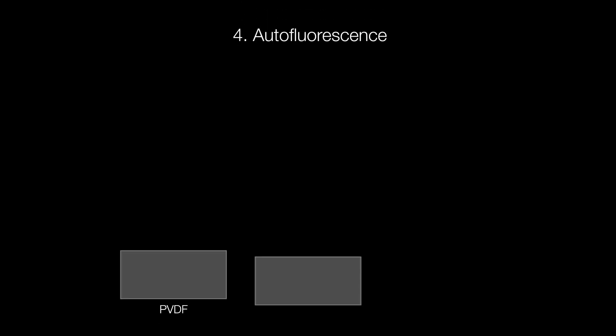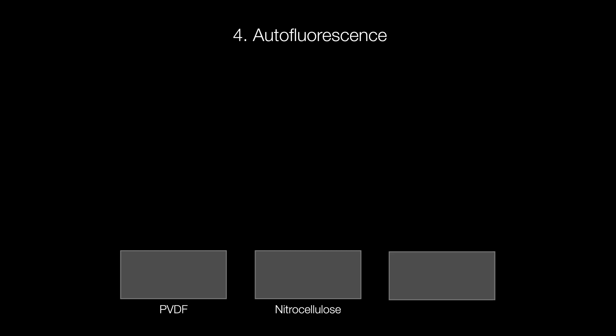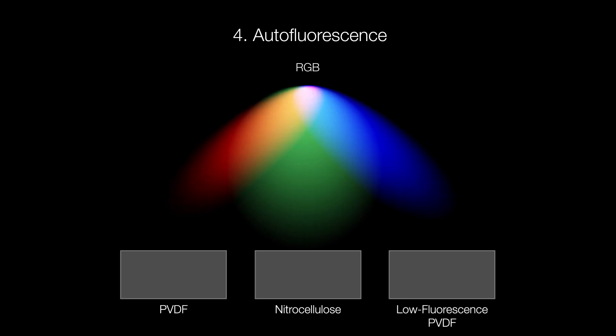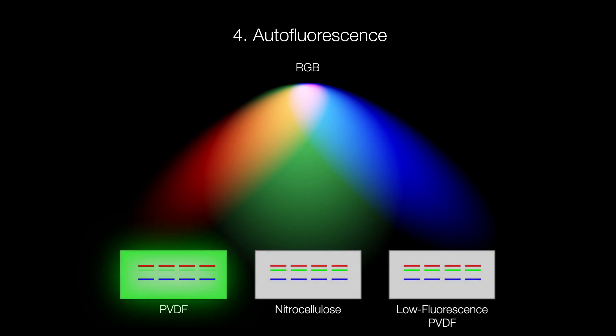Finally, when performing fluorescence western blots, be aware that some membranes will autofluoresce more than others. Standard PVDF membranes are more susceptible to autofluorescence than other membrane types. Choose nitrocellulose or low fluorescence PVDF for fluorescence western blotting experiments.